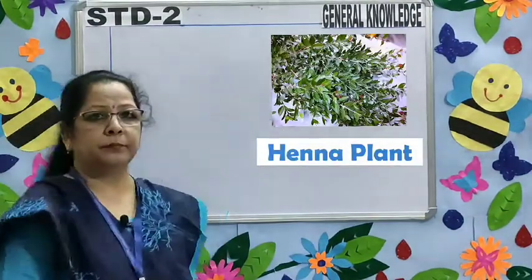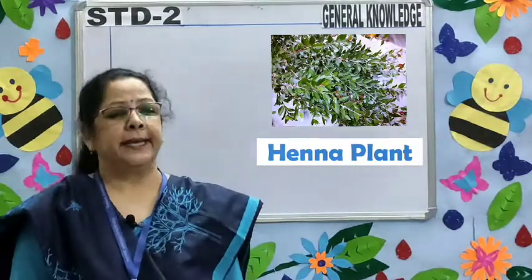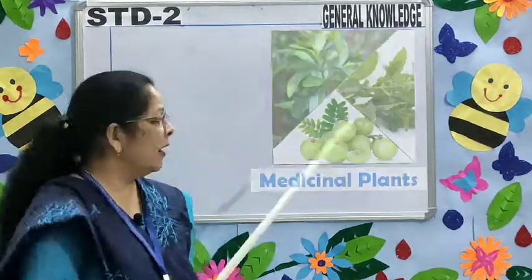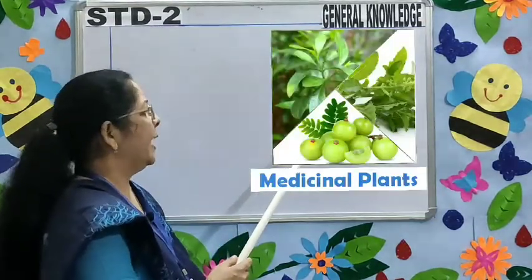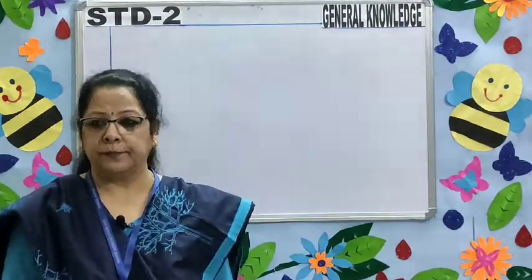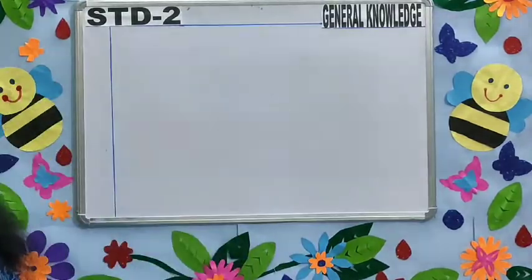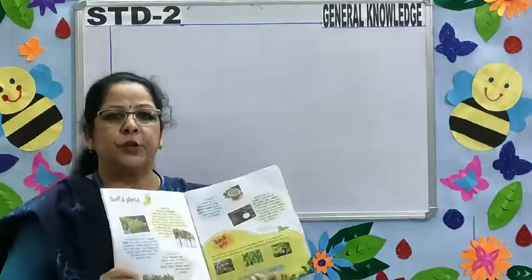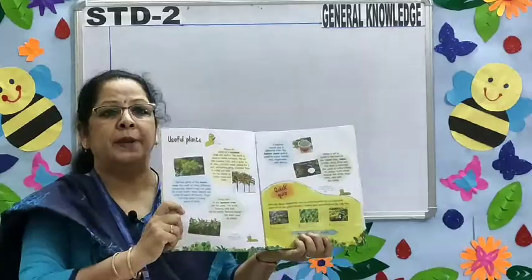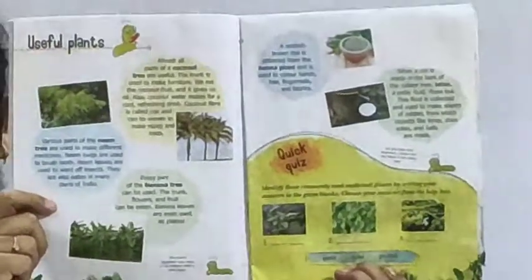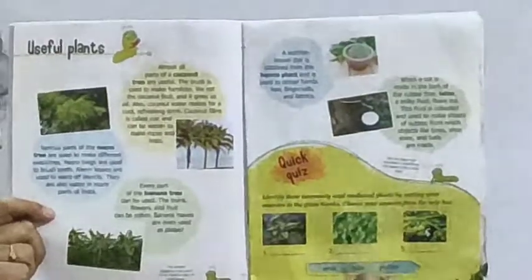Henna plant — the henna plant gives us a reddish brown dye used for hair. Amla, Tulsi, and Pudina are medicinal plants. Children, this topic, Useful Plants, is on page number 36 and 37 in your General Knowledge book.